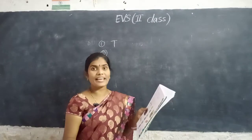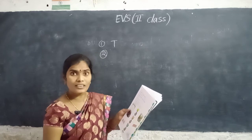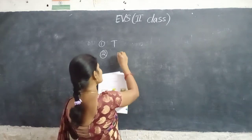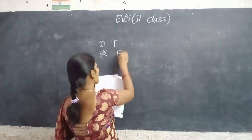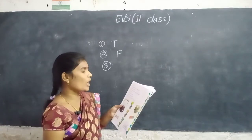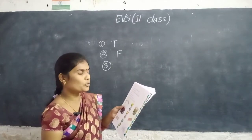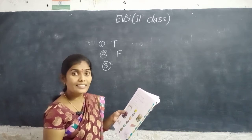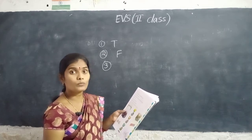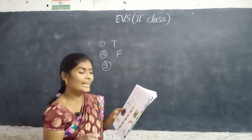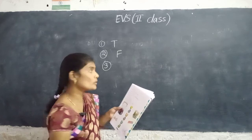And second one: We get metal from sky? No, from the ground. So second one is false. Leather allows light, electricity and heat to pass through? Leather doesn't allow light, electricity and heat. So it is false.